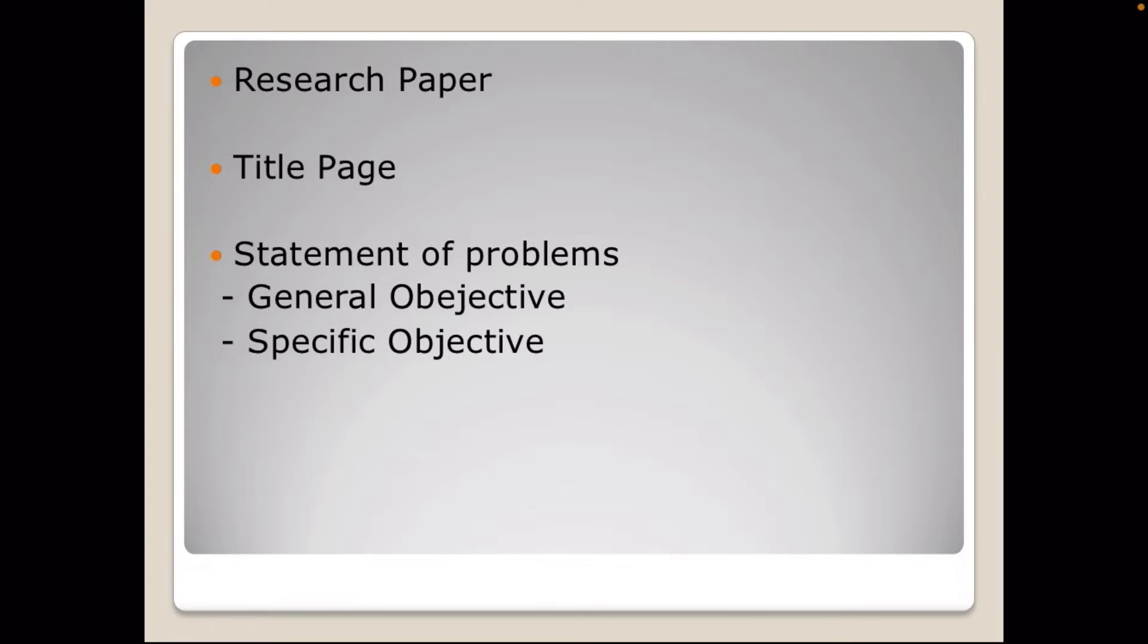Next is statement of problems. We have there two objectives, the general and specific. But what is statement of problem or objectives? It is the nature and scope of the problem and it should be presented with clarity. The two types are general objective and specific objective. In general objective, it tells that this is related to the problem as given in the early part of the section. In the specific objective, this states the purpose of each experiment conducted. So in general, the early parts of the problem, and specific is the purpose of each experiment conducted.